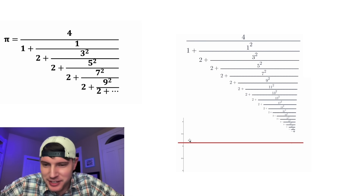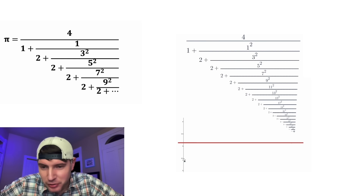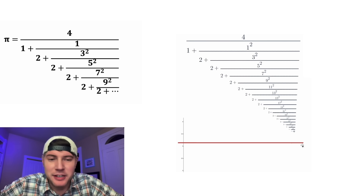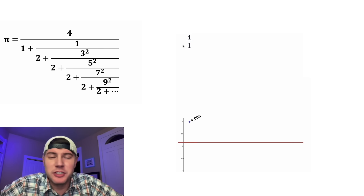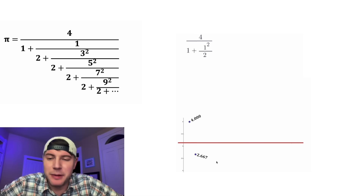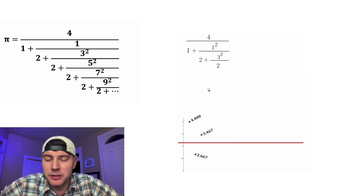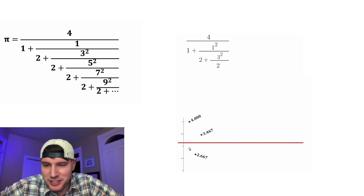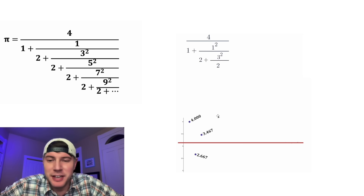There's a cool way you can visualize this. If we show a graph, this is pi right here — you can see how it approaches pi. The first level would be 4 over 1, which gives us 4. If you go one level further, it gives us about 2.667. And if you go another level, it'll give us about 3.467. So it looks like it's alternating — going above, below, above. The next level gives us 2.895.